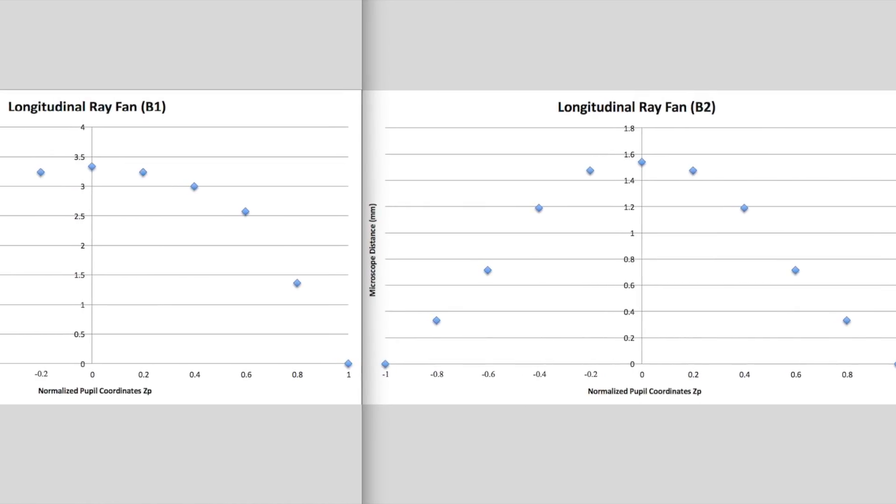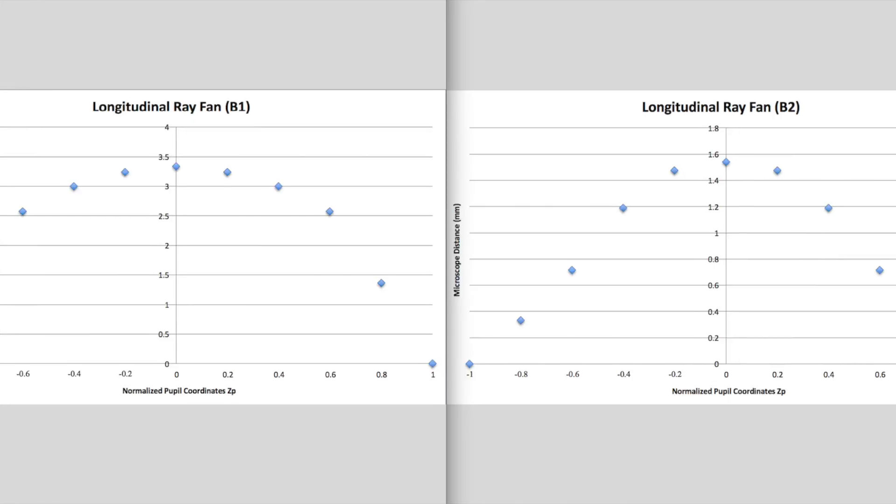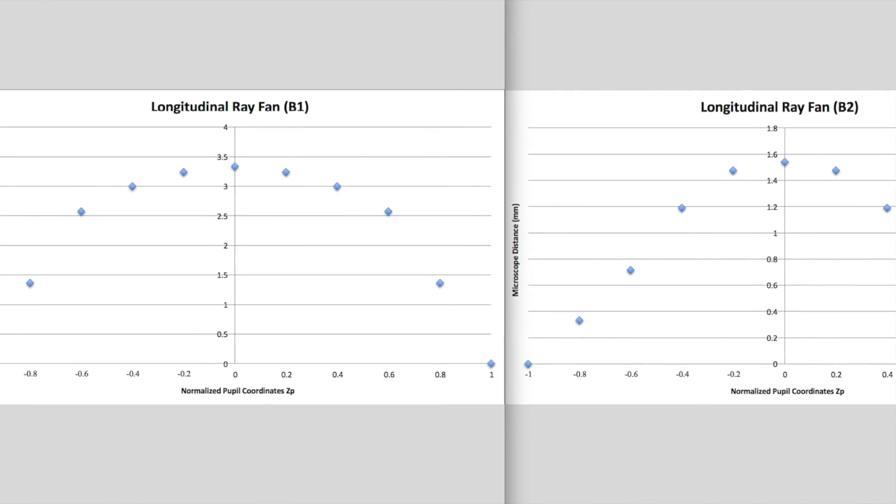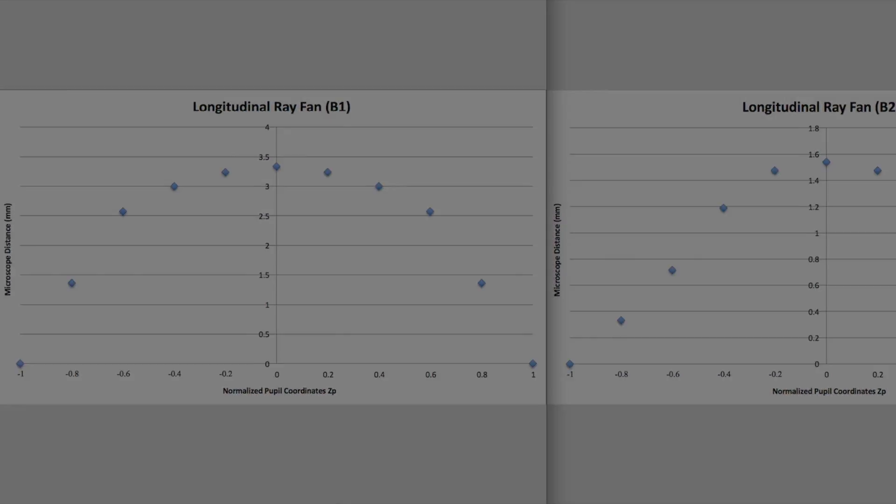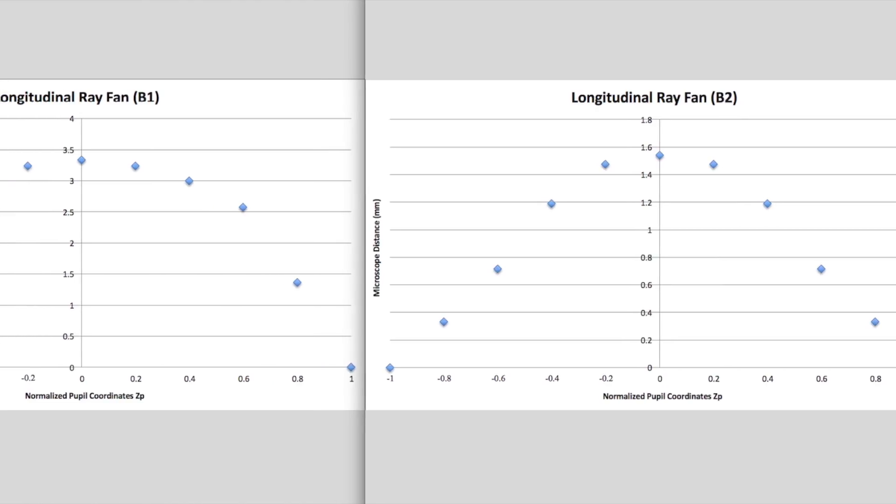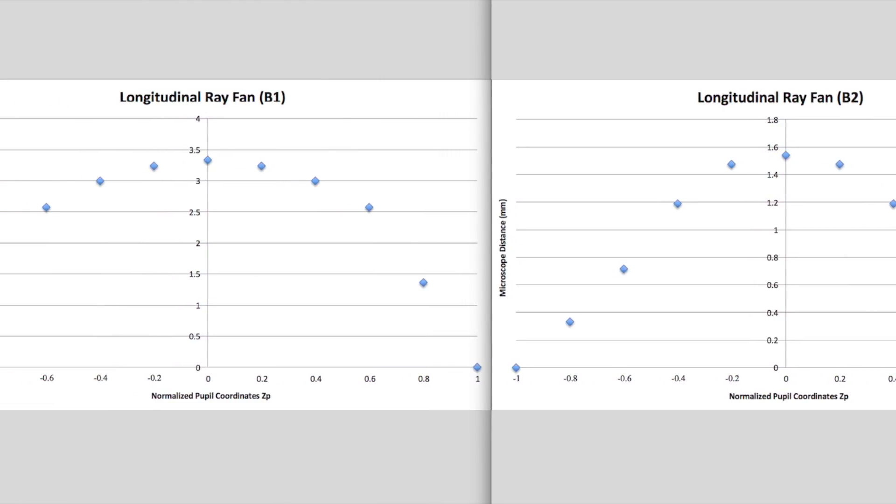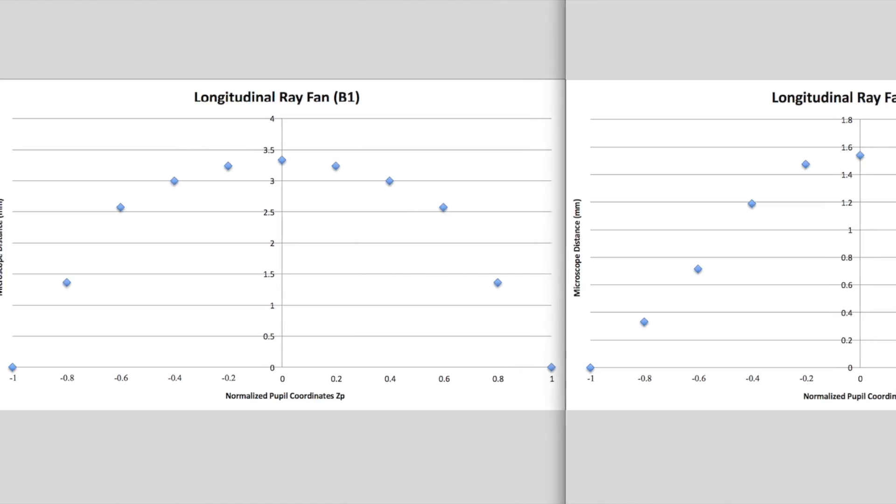Our results show that spherical aberration was indeed minimized by changing the shape factor of the lens. The transverse and longitudinal aberrations present in the system were minimized by a factor of two. The spherical aberration could be further minimized by bending the lens so that its shape factor is at a minimum.